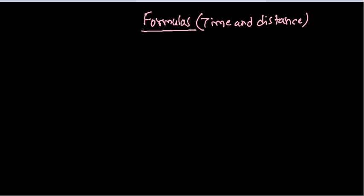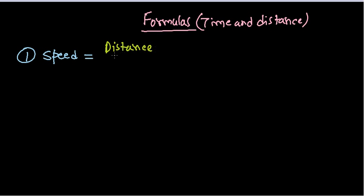Time and distance is very basic math. The most important formula you need to know above all is: what is speed? Speed is the total distance traveled over time. Speed equals distance divided by the time taken to travel that distance — that's what we always mean by speed.